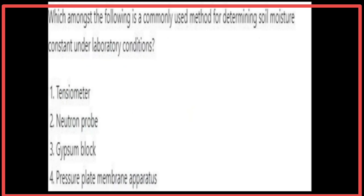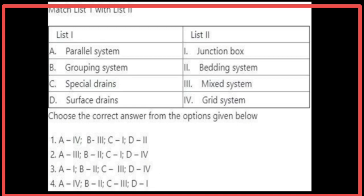The most commonly used method for determining soil moisture constants under laboratory conditions is the pressure plate membrane apparatus. Matching drainage systems: the parallel system is a grid system; the grouping system is a mixed system; special drains form a junction box; and the bedding system is a surface drain. The answer is 4, 3, 1, 2 — the first option.